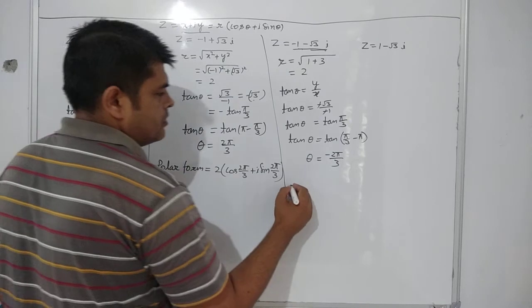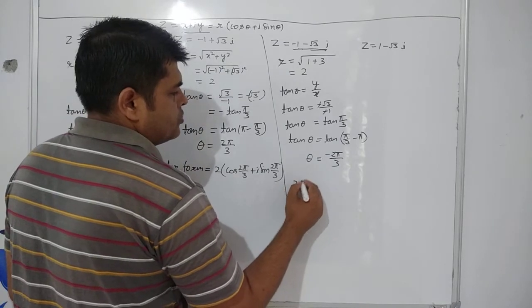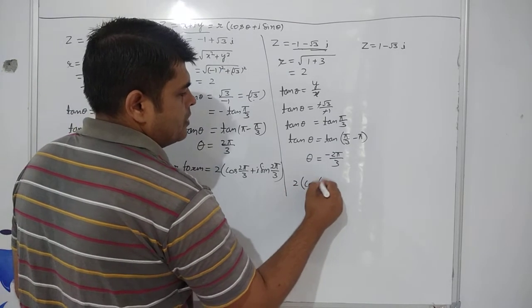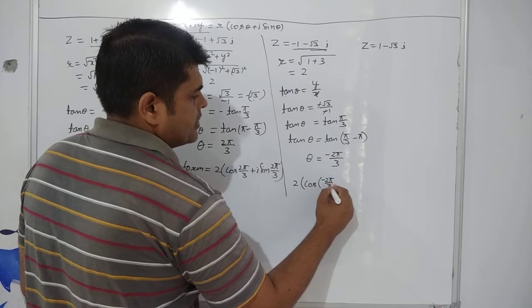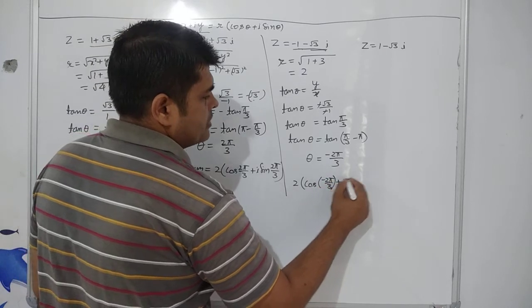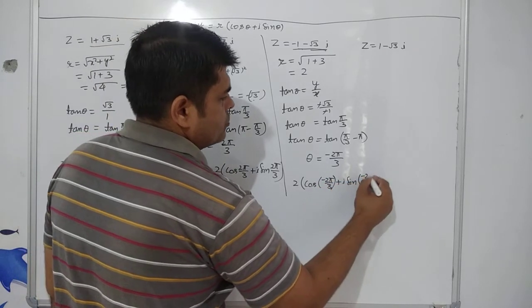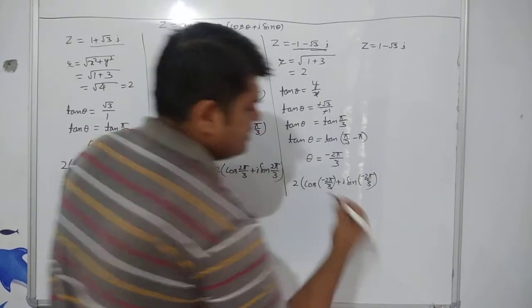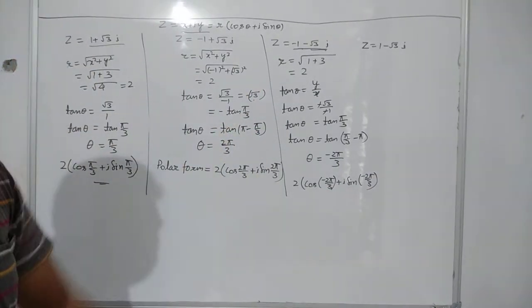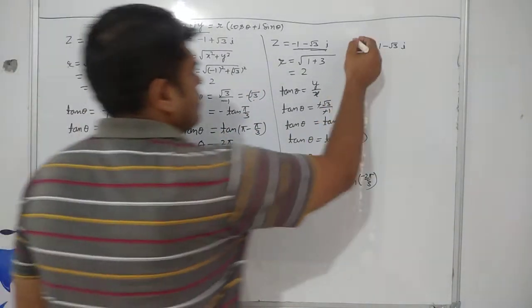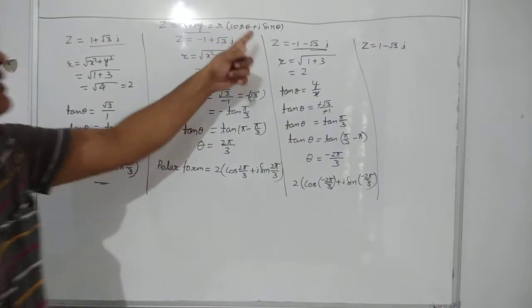So, what is the polar form? The polar form is 2 cos minus 2 pi by 3 plus iota sin minus 2 pi by 3. So, it is very simple to write down a complex number into polar form. You have to just get r and theta.